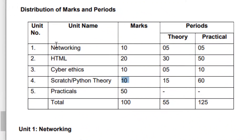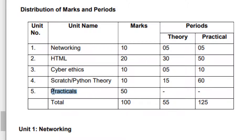The first unit is Networking, and Networking carries 10 marks. The second unit is HTML, and HTML carries 20 marks. After this, we have a third unit, which is Cyber Ethics, carrying 10 marks. And the last one is Scratch and Python theory, which carries 10 marks.